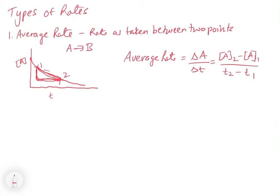So yes, it's giving you an average rate, but you're not really getting that instantaneous information as to exactly what the rate is at any one of those points. So that's why we have the other one, which is called the instantaneous rate.